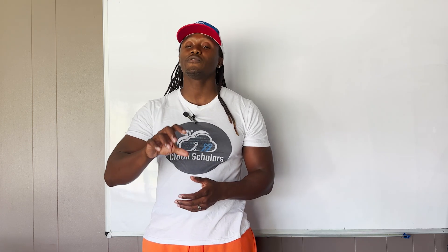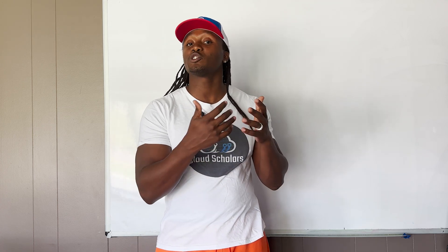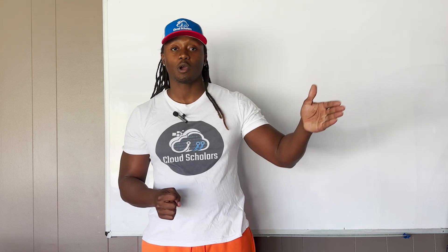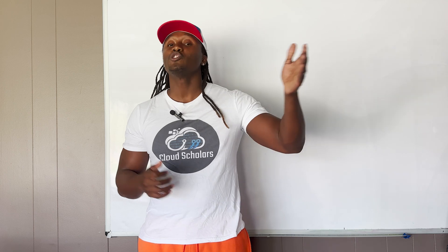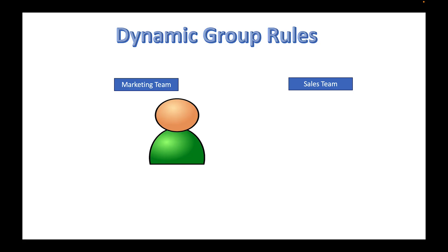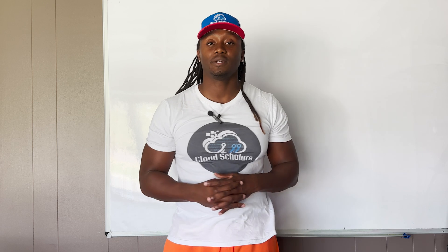With dynamic group members, you would say: if the employee is in this group, they get this license; if they're not in the group, they don't get the license. For example, if your organization says marketing gets Adobe but sales doesn't, then the dynamic rule will automatically move someone out of the marketing group when they transfer to sales.